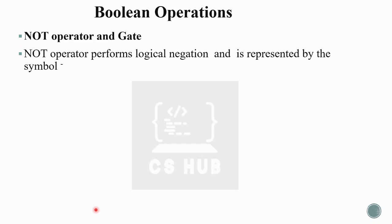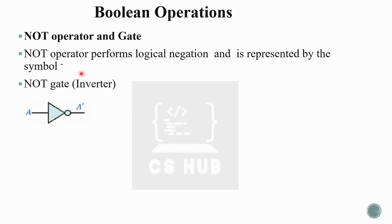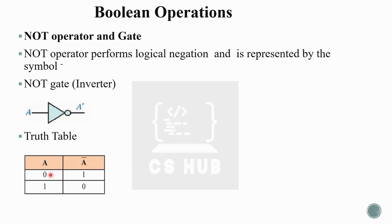The NOT operator and gate perform logical negation, represented by a bar over the variable. If the input is A, the output is A-bar — the complement. The bar on top represents negation.